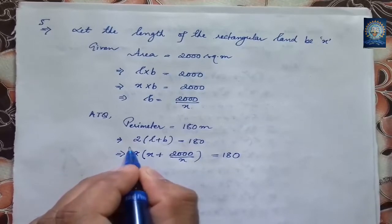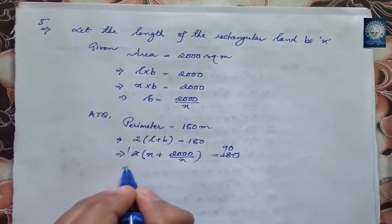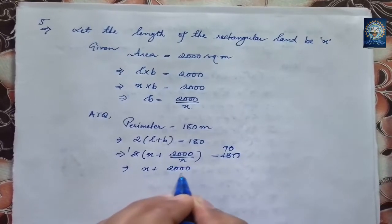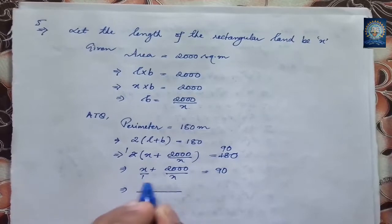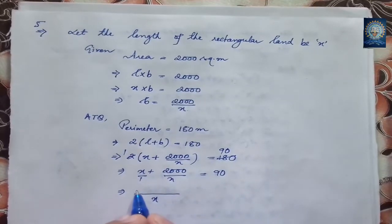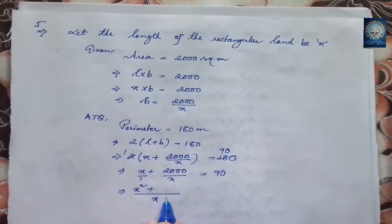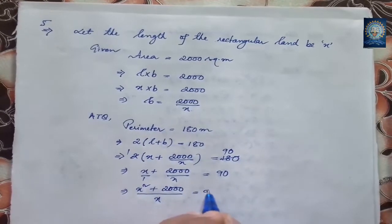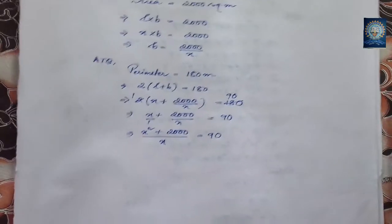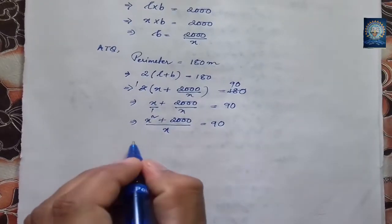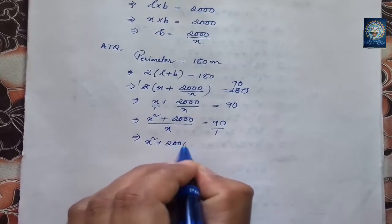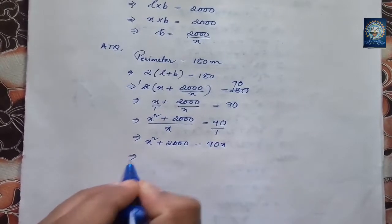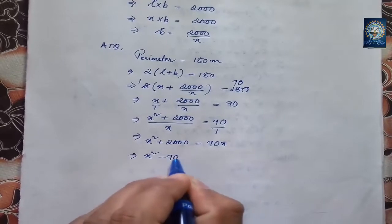We can cancel the 2, so x plus 2,000 by x equals 90. Taking LCM of 1 and x, which is x, it becomes x squared plus 2,000 all over x equals 90. Cross-multiplying gives x squared plus 2,000 equals 90x, which implies x squared minus 90x plus 2,000 equals 0.